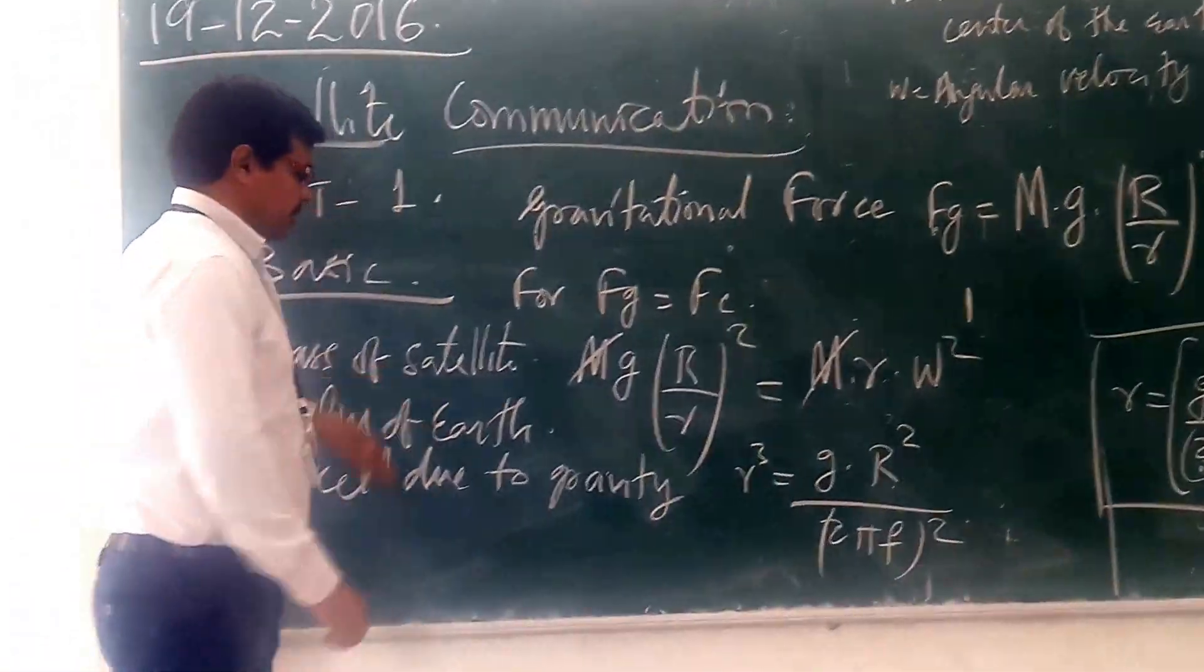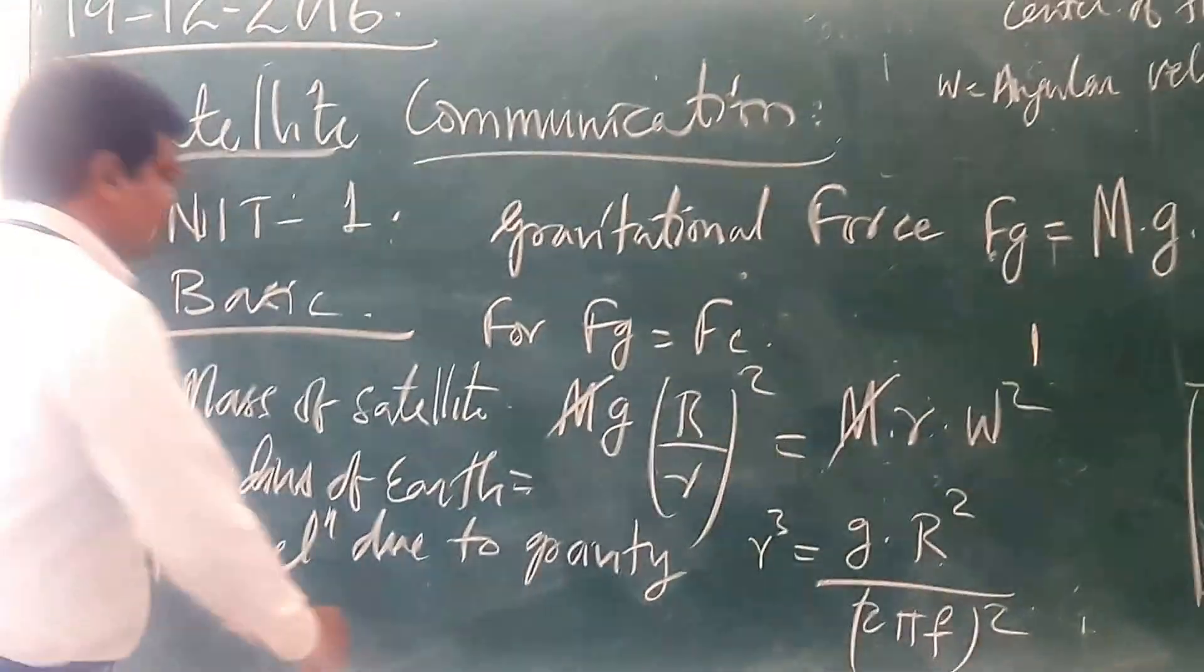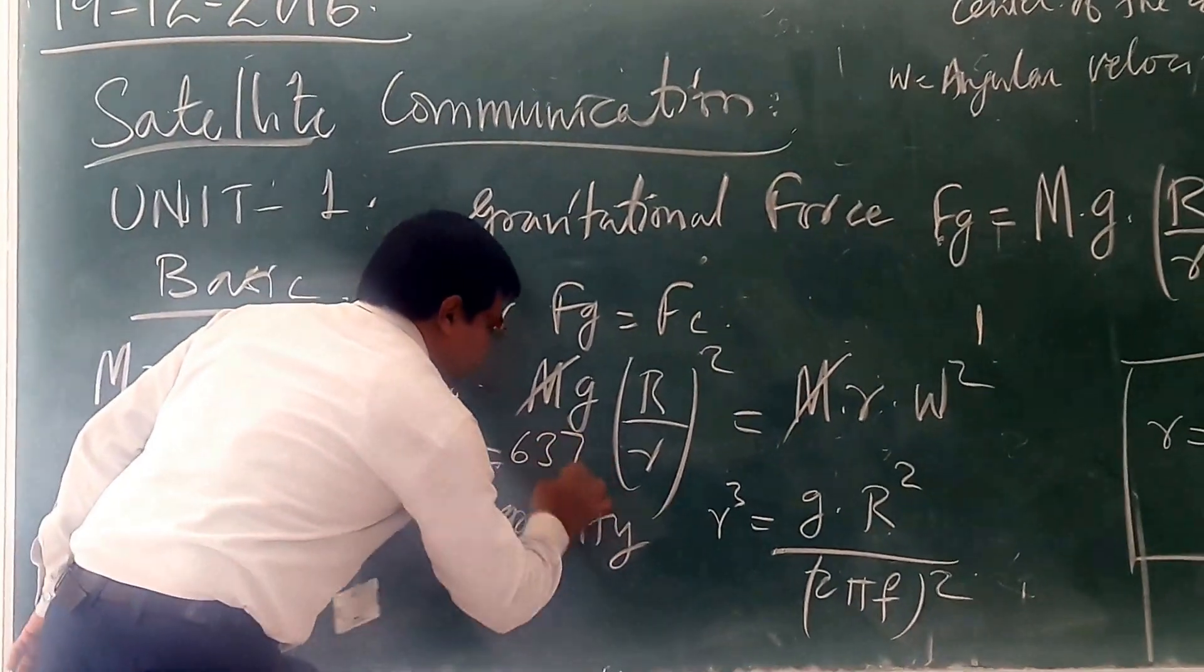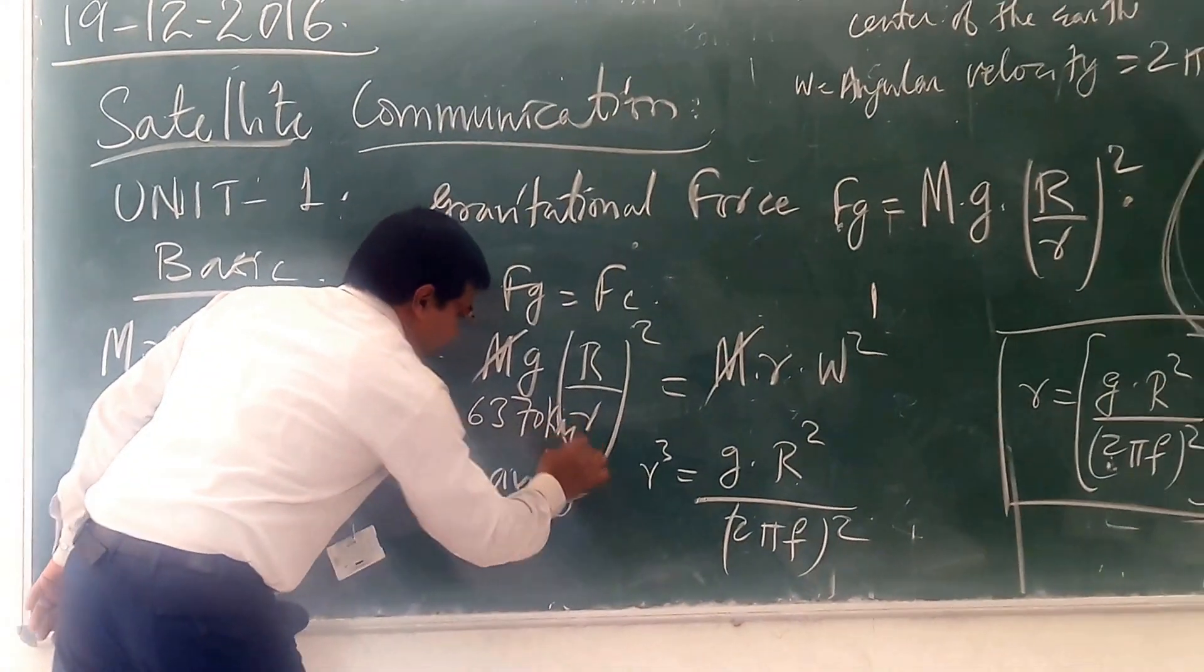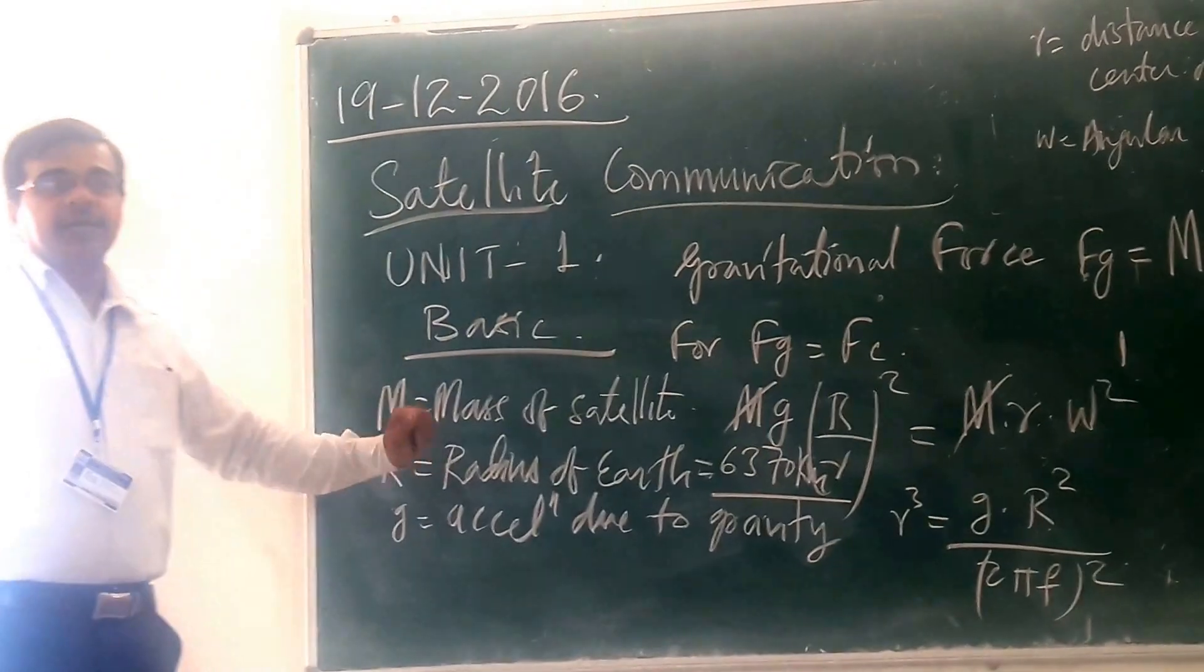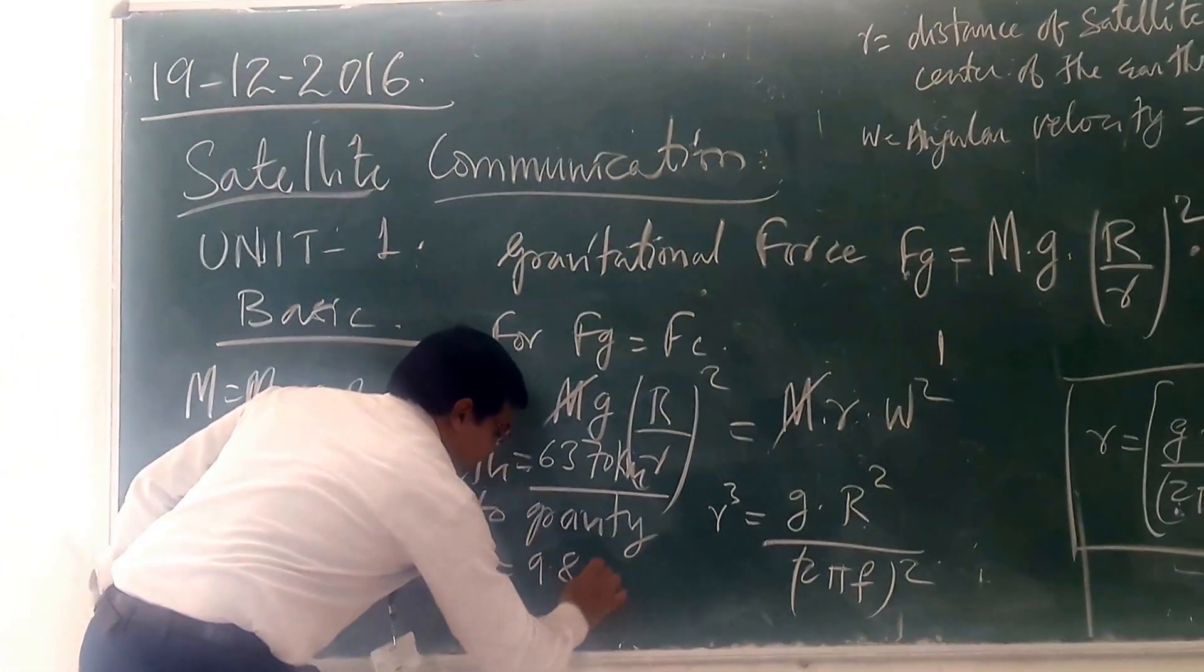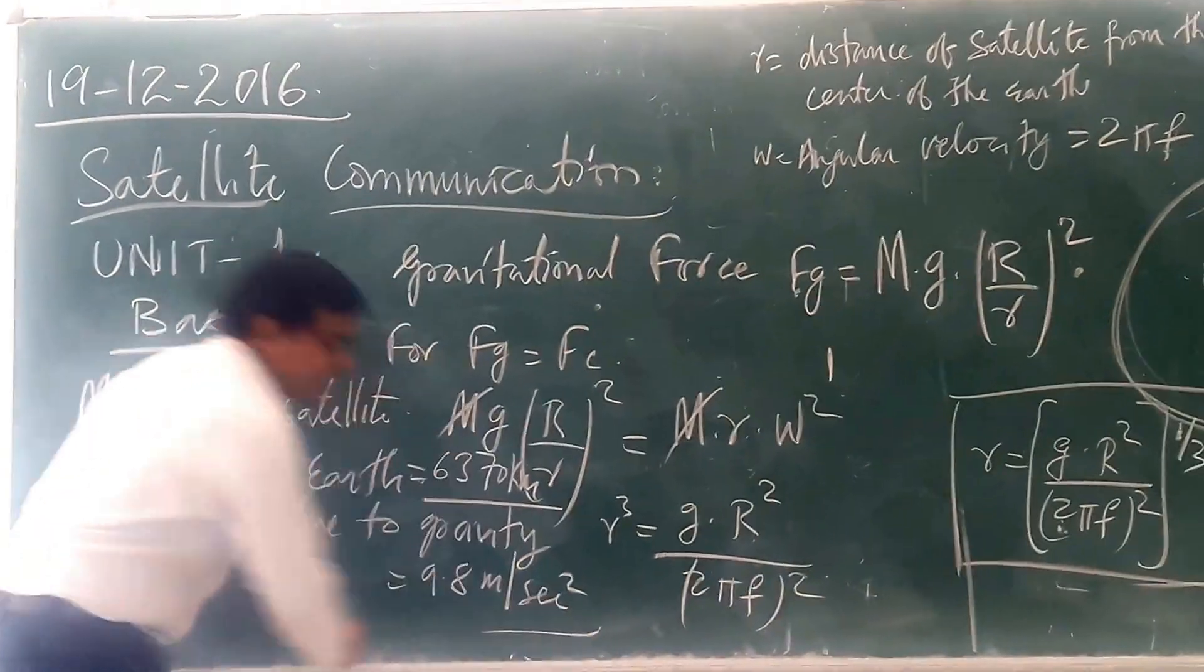What is the radius of the Earth? The radius of the Earth is 6370 km. And what about acceleration due to gravity? It is 9.8 meter per second squared. So this is your gravitational force.